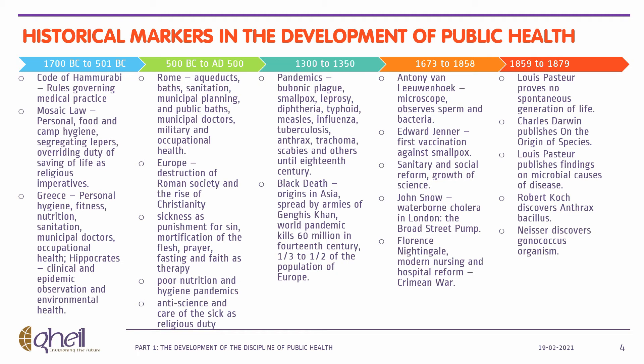The era of Renaissance and exploration (1500–1700 AD) was the rebirth of thinking about the nature of the world and humankind. There was a growing belief that diseases were caused by environment, not by spirits, and critical thinking about disease causation emerged — for example, malaria meaning 'bad air.' In the 18th century, problems of industrialization and urban slums led to unsanitary conditions and unsafe workplaces. Edward Jenner in 1796 demonstrated vaccination against smallpox.